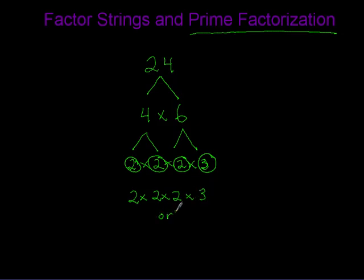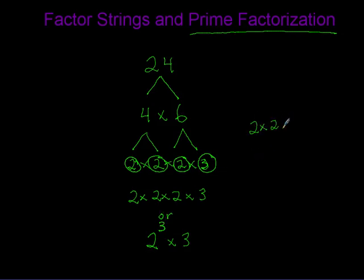We talked about exponents previously — squaring a number uses an exponent of two. In this case our factor is two and there are three twos, so we're going to put an exponent: two to the third power times three. That three up here doesn't mean two times three — it means two times two times two, which equals two to the third power, or another way of saying that is two cubed.